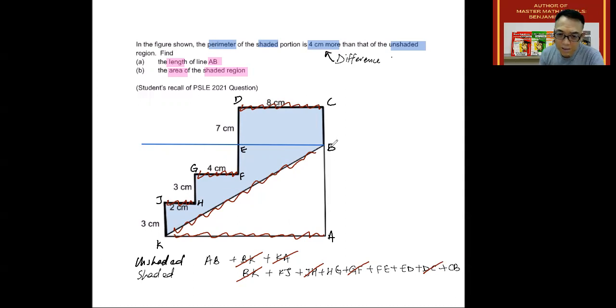Next, I need to eliminate AB, this line. And AB is equivalent to EF, GH, and JK. So these three lines add up to AB. And I'm going to eliminate them together. So when I eliminate AB, I will also eliminate EF, HG, and JK.